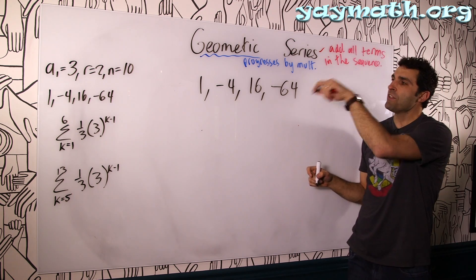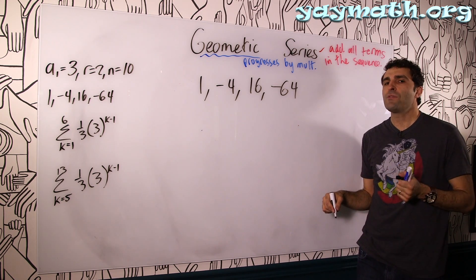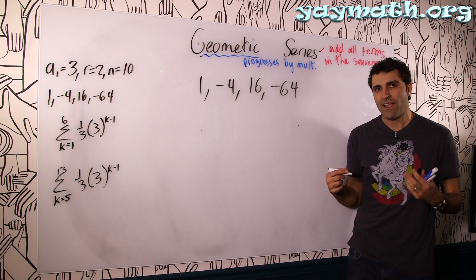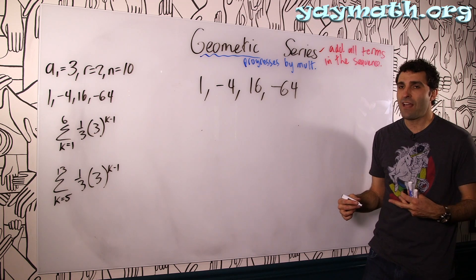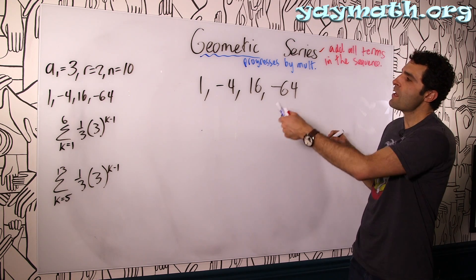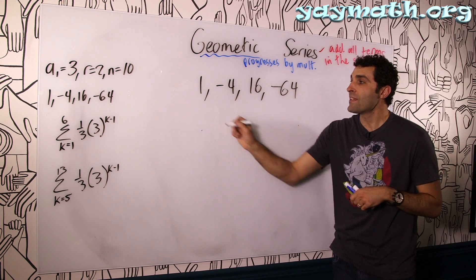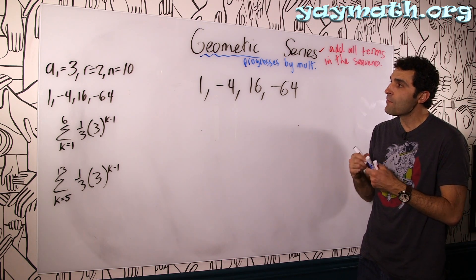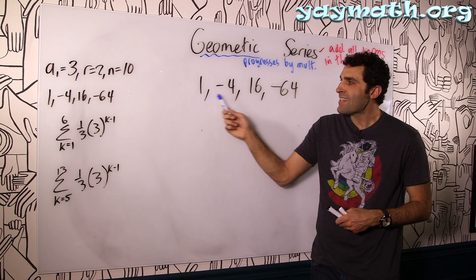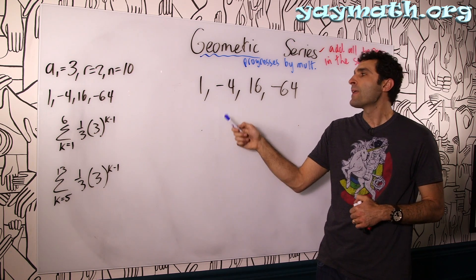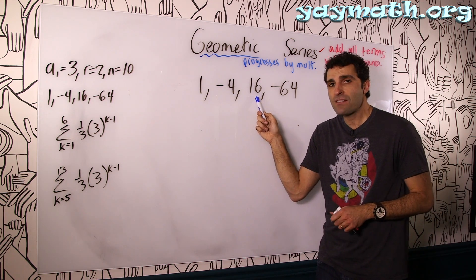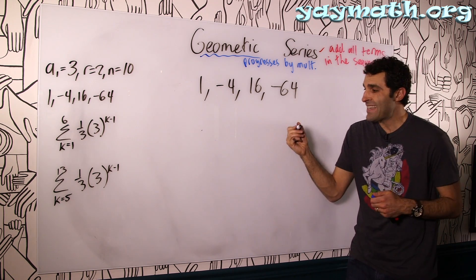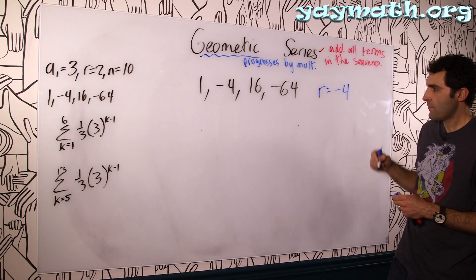In that spirit, I want to do this problem both ways — with the formula and manually — and see we get the same thing. There's something very satisfying about that. Let's get the sum of this geometric sequence. We can see it's geometric because it progresses by multiplication. 1 times what is negative 4? Negative 4 times what is positive 16? 16 times what is negative 64? r is negative 4.